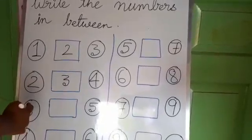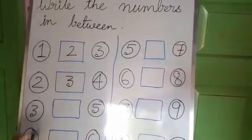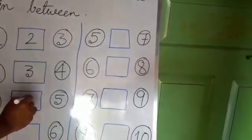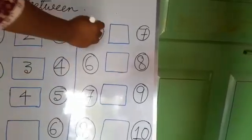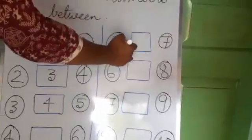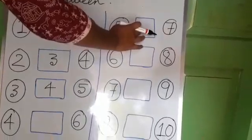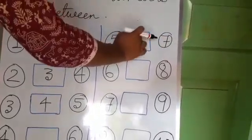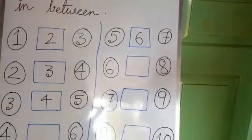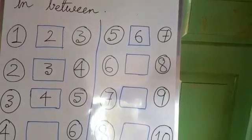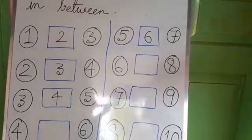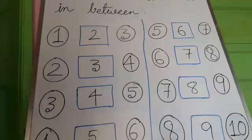What comes after 5 and before 7? It is 6. Similarly, you will do the rest of it. I will check it. Please match your answers.